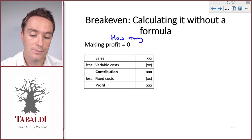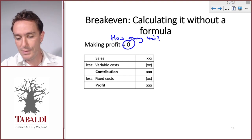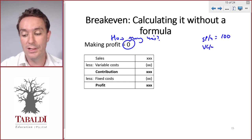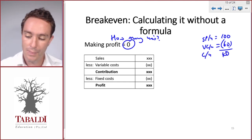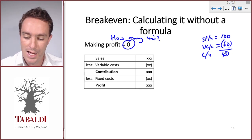Assume our selling price per unit is 100 and our variable cost per unit is 60, so we can calculate our contribution per unit—that's 40. Each unit contributes 40 towards our profit. Then let's assume our fixed costs amount to 2,000 per month.